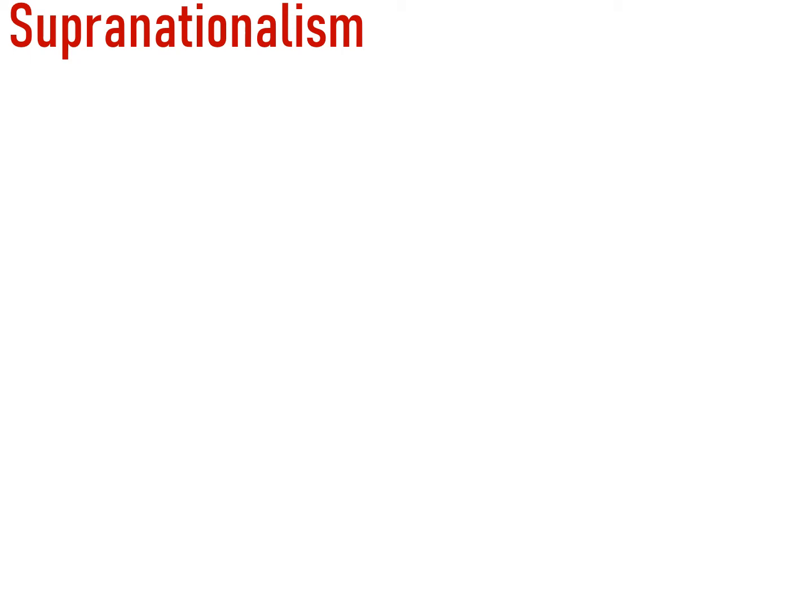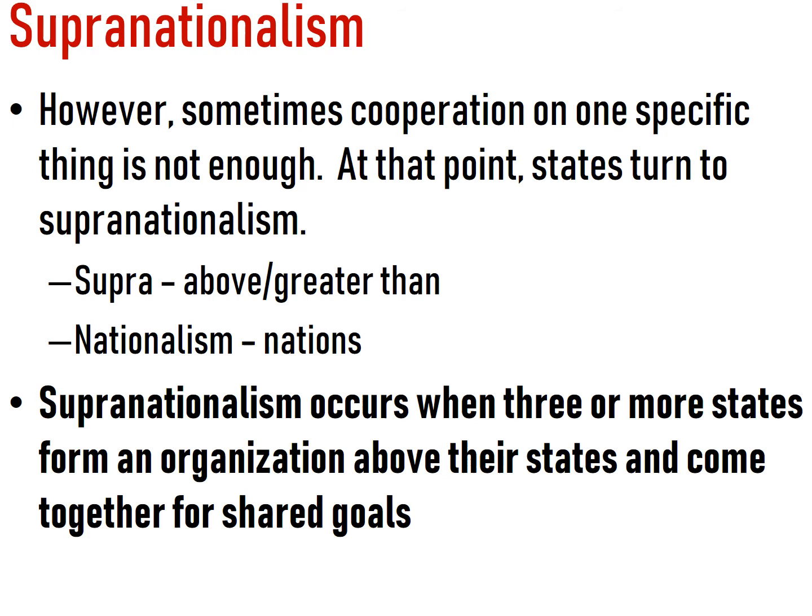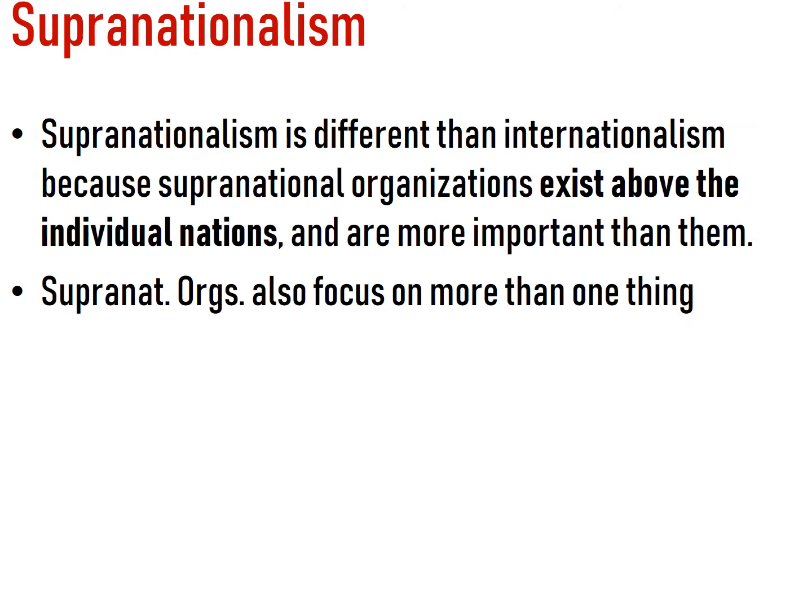Supranationalism is a little bit different than international organizations. Sometimes working together for one specific objective isn't enough, so they turn to a more serious form of working together. Supranationalism happens when three or more states form an organization that is above their individual states. They come together for shared goals with multiple purposes. This organization exists above the individual nations — it is stronger than the individual nations — and they focus on more than one thing.